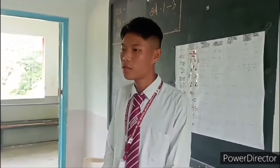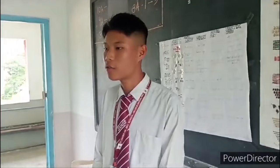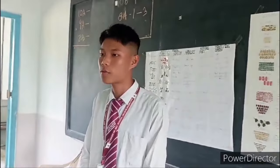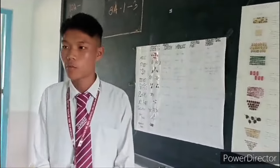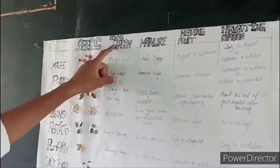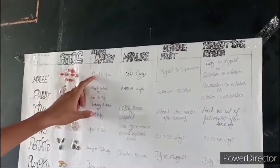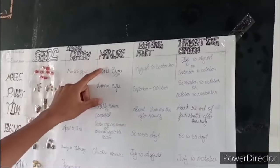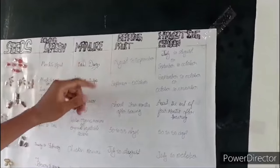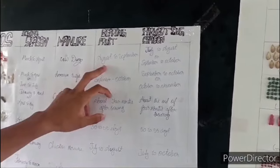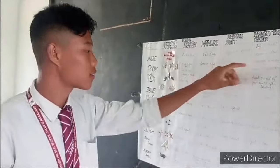Good morning everyone. My name is Temjil Susam of Class NA from San Sipera Irish Henry School. I am going to present the different types of food crops in Nagaland. First we have maize. Sowing season of maize is March to April. The manure required for maize is cow dung. Bearing fruits of maize is August to September. The harvesting season for maize is July to August.